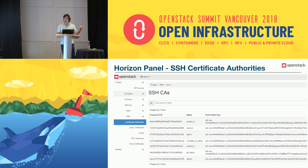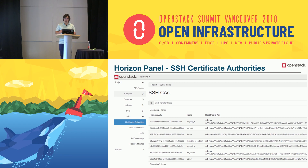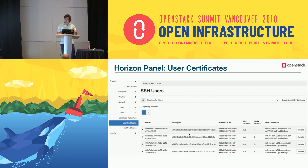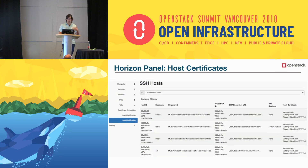I'll show you some snapshots of the panels. This is the certificate authority panel, where you can see that every project is its own certificate authority — you're not sharing certificate authorities across tenants, otherwise you'd be able to access each other's VMs. There's also a list of user certificates with a revoke button, and similarly you can look at the list of hosts and the certificates generated for them.